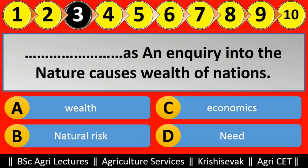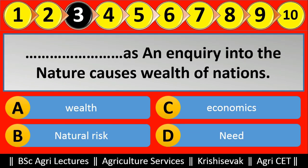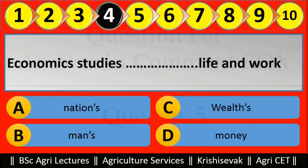Question number fourth: Economics studies dash dash life and work. Options are: nation's life, man's life, wealth's life, money's life. The right answer is option B — man's life. Economics studies man's life and work.